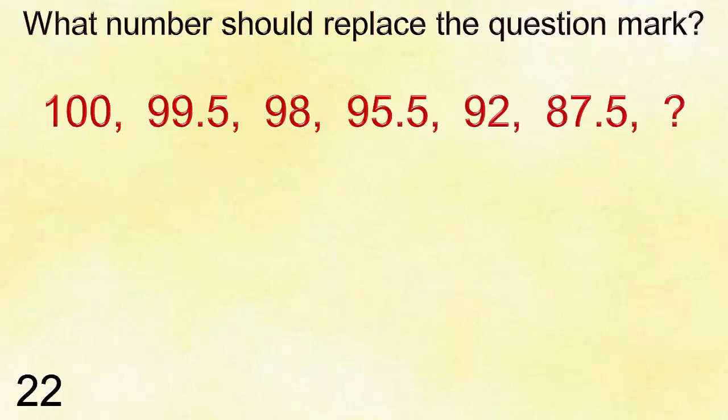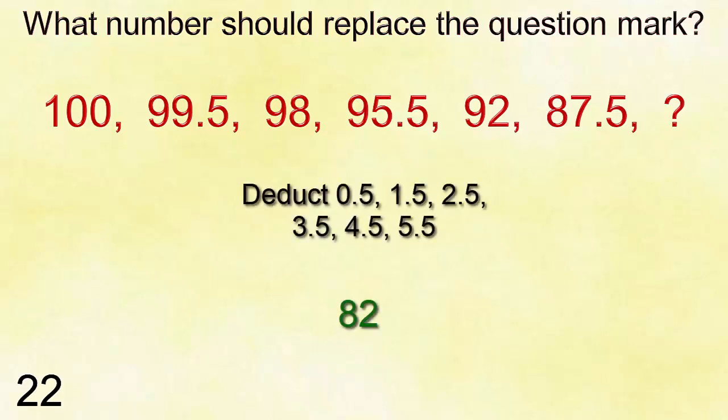Number twenty-two: one hundred, ninety-nine point five, ninety-eight, ninety-five point five, ninety-two, eighty-seven point five, question mark.